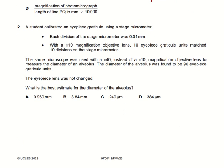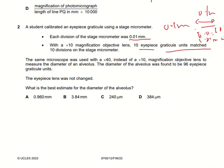A student calibrates an eyepiece reticule using a stage micrometer. The stage micrometer has divisions of 0.1 mm, and each small division is 0.01 mm. With a 10x magnification objective lens, 10 eyepiece reticule units match 10 divisions of the stage micrometer. The same microscope is then used with a 40x objective lens to measure the diameter of a red blood cell (RBC).